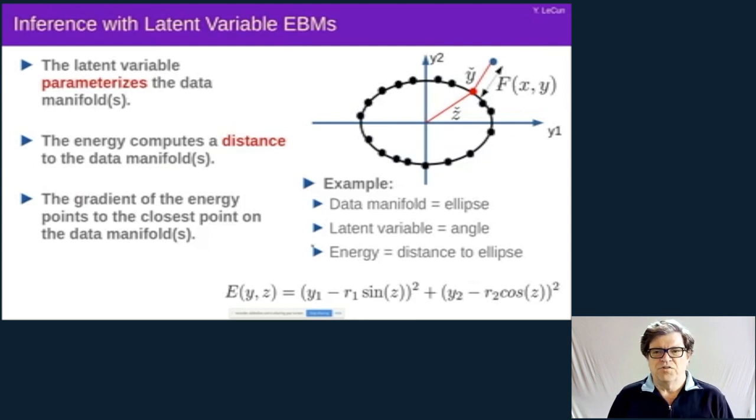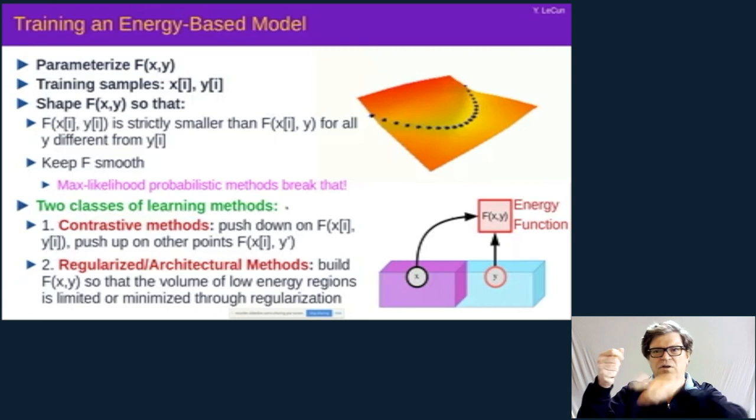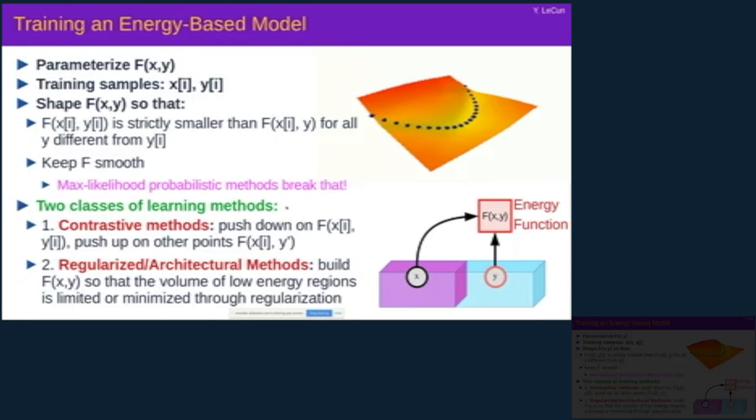So an example of latent variable, let's say our data manifold is an ellipse. When we find a data point, we need to compute its energy by finding the point on the manifold that is closest to it, so that we measure the distance to the manifold. And the latent variable would be the angle that leads to the point, the closest point on that manifold. Now, in this simple case, of course, you can write it explicitly, but in more complex cases, of course, we need to find this manifold and the parameterization is non-trivial.